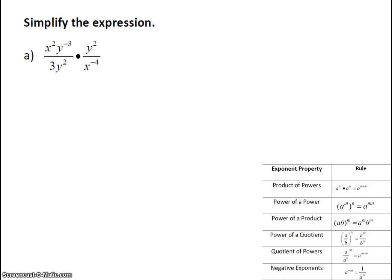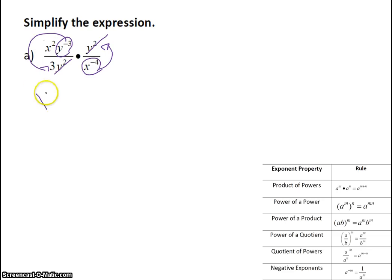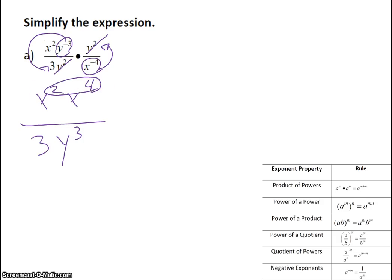For this next problem, we're going to simplify. When we simplify, we are just going to cross off any like terms between the top and the bottom. So I'm going to start off by canceling the y squareds, because one's on the top and one's on the bottom. Then I'm going to move my negative exponents between the top and the bottom — I'm going to move those two terms up. So I have my x squared and x to the 4th, and my 3 stays on the bottom. My y cubed gets moved down to the bottom. Now I'm going to add my two exponents in the numerator using the product of powers. So it becomes x to the 6th over 3y cubed, and that is simplified.